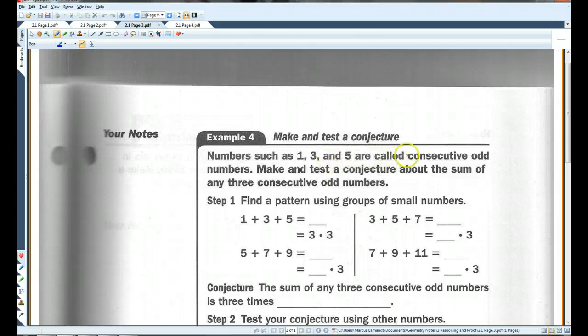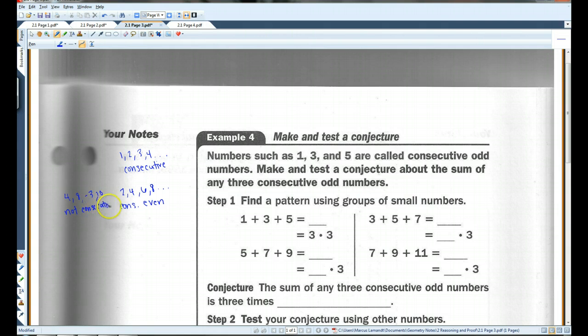Numbers such as one, three, and five are called consecutive odd numbers. Consecutive means they come one right after the other. So, for example, one, two, three, four, five, six, seven, et cetera. These are consecutive. Two, four, six, eight. These would be consecutive even numbers. So, one, three, five are consecutive odd numbers. If I were to just pick random numbers like four, eight, negative three, ten, these are not consecutive. So, consecutive means they come one right after the other.